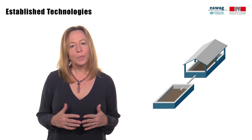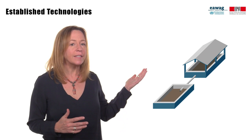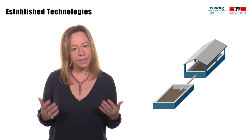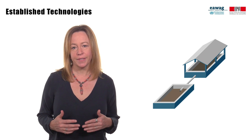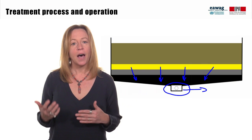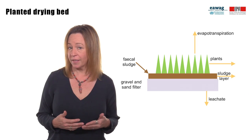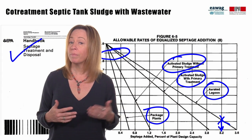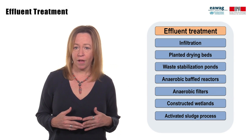This week, you learned about treatment processes for six different established technologies, their operations and maintenance requirements, and design parameters. These were settling thickening tanks, unplanted drying beds, planted drying beds, co-composting, co-treatment with wastewater, and effluent treatment technologies.